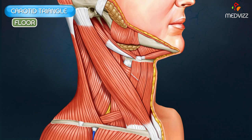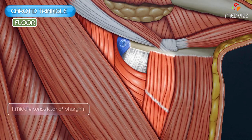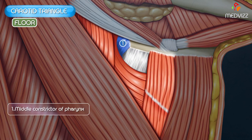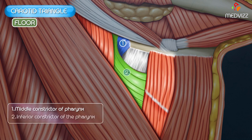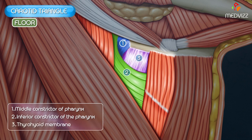The floor of the carotid triangle is formed by parts of the middle constrictor of the pharynx, a part of the inferior constrictor of the pharynx, and the thyrohyoid membrane. These are the structures which form the floor.